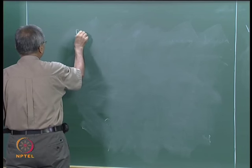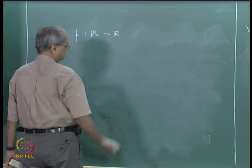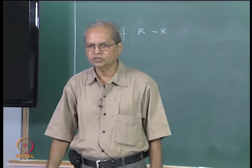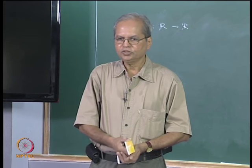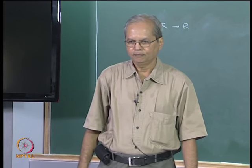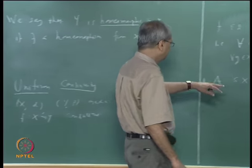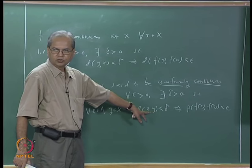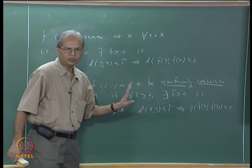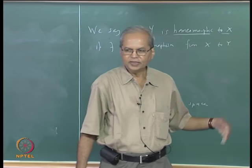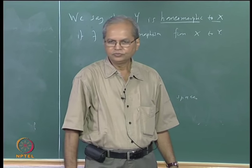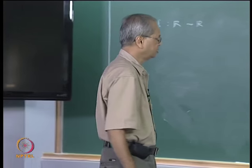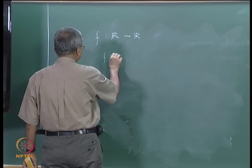Let us see some examples. Going back to our favorite space: every function defined on a discrete metric space is continuous. Is it also uniformly continuous? Yes — whatever epsilon is given, take delta equal to one-half. Then d(x,y) < delta can happen only when x equals y, so the distance between f(x) and f(y) is 0. On a discrete metric space, not only is every function continuous, but it is also uniformly continuous.